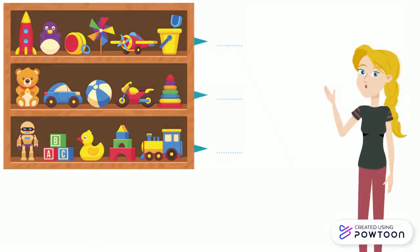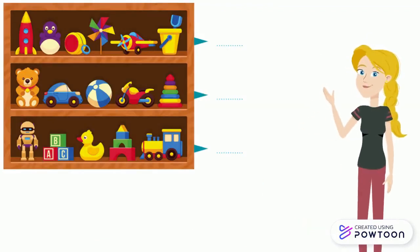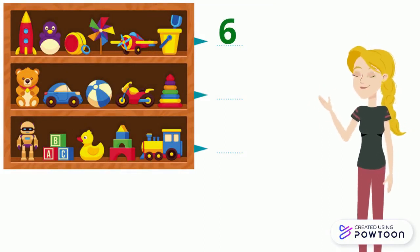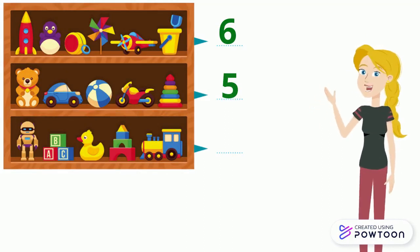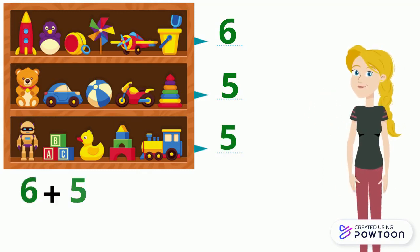How many toys are there? In the first shelf, there are 6. In the second one, there are 5. In the third one, there are 5. So, the addition sentence is 6 plus 5 plus 5.